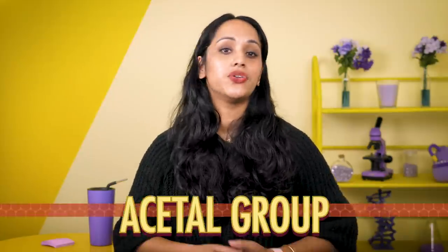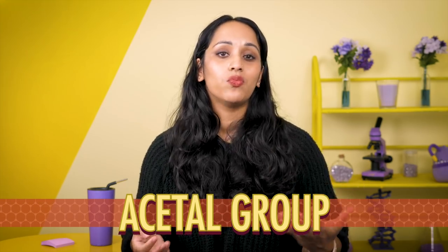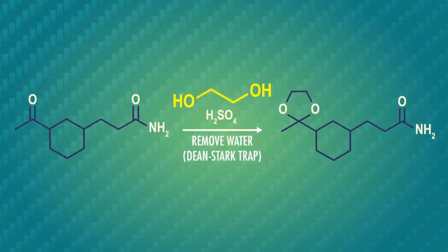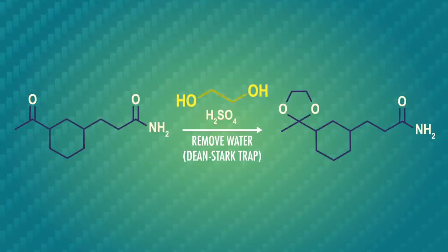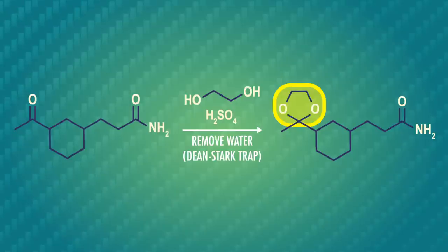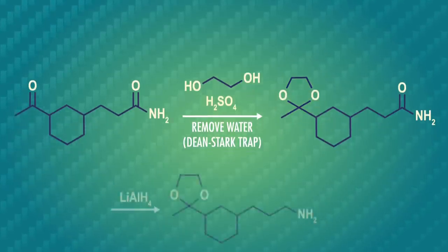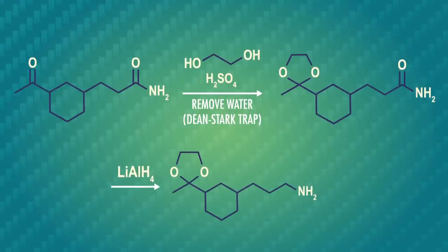For example, one way to protect aldehydes and ketones is to turn them into an acetal group. We met the acetal group in episode 29 when we added methanol to a ketone. This group protects aldehydes and ketones from reactions with nucleophiles and bases. And the diol makes a cool little ring structure. With our protecting group in place, we can go ahead and react our amide with lithium aluminum hydride to convert it to an amine.